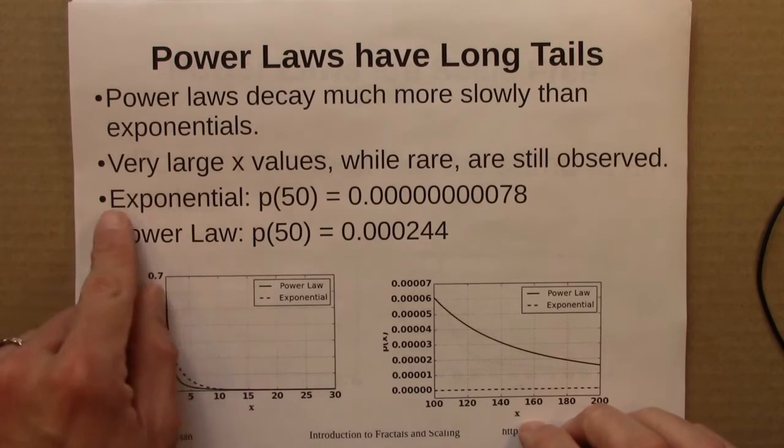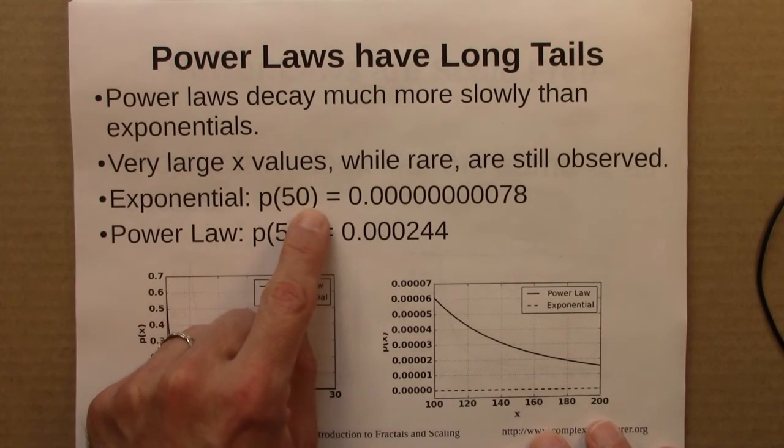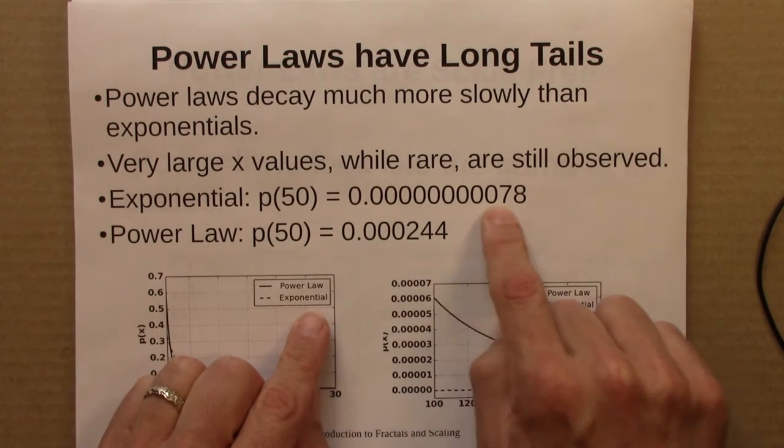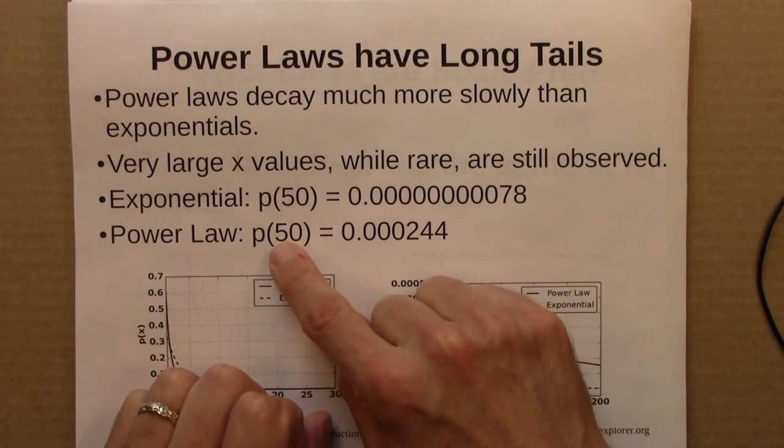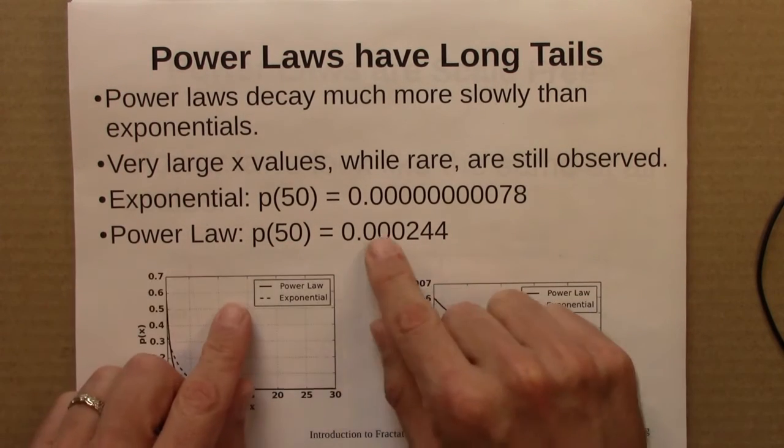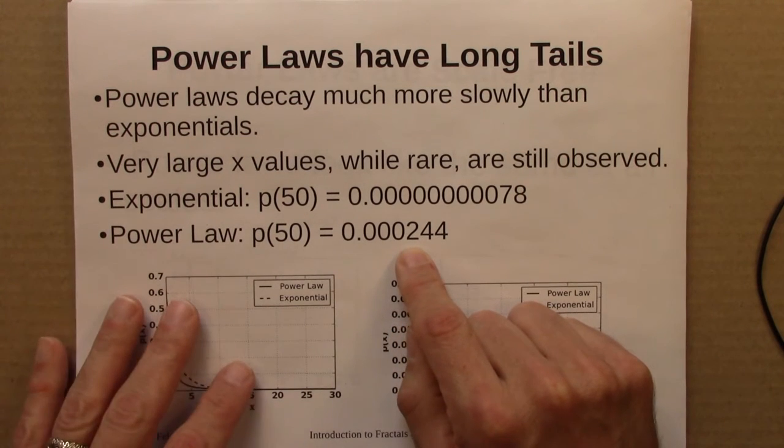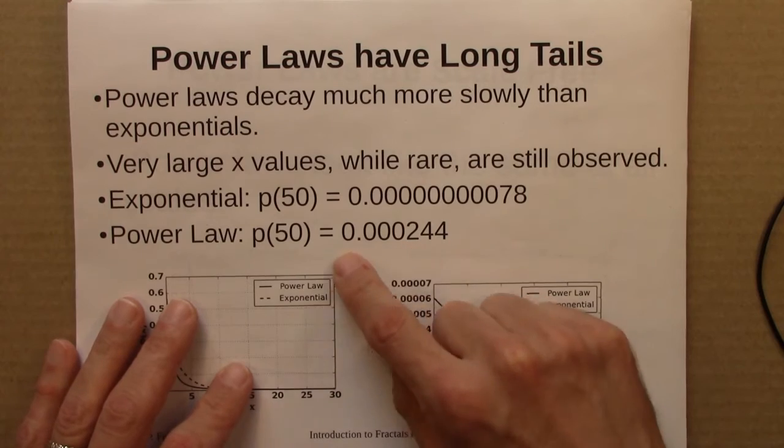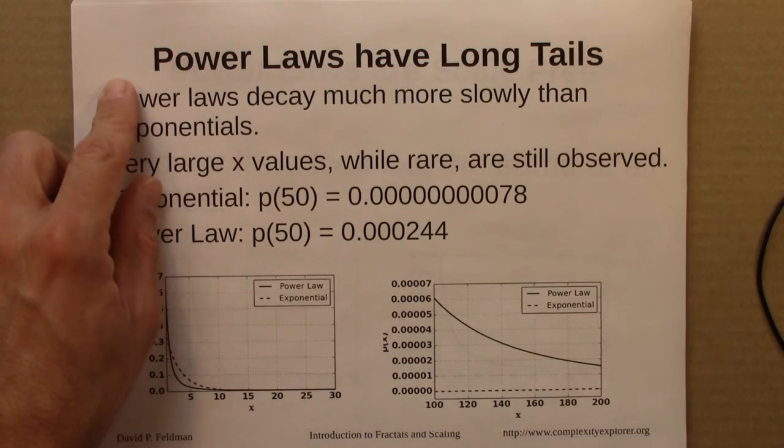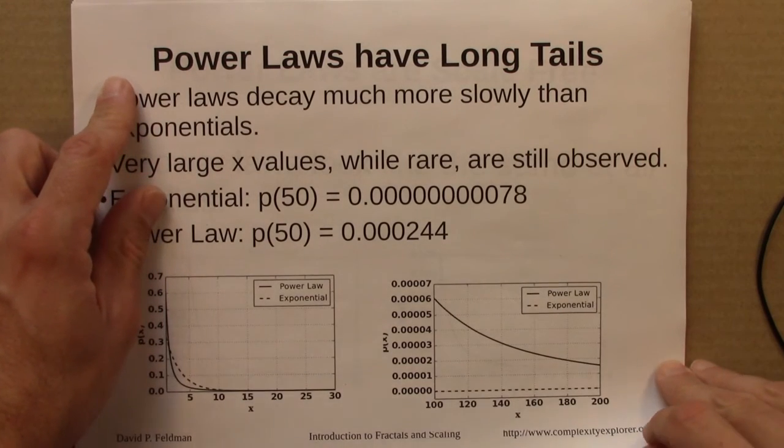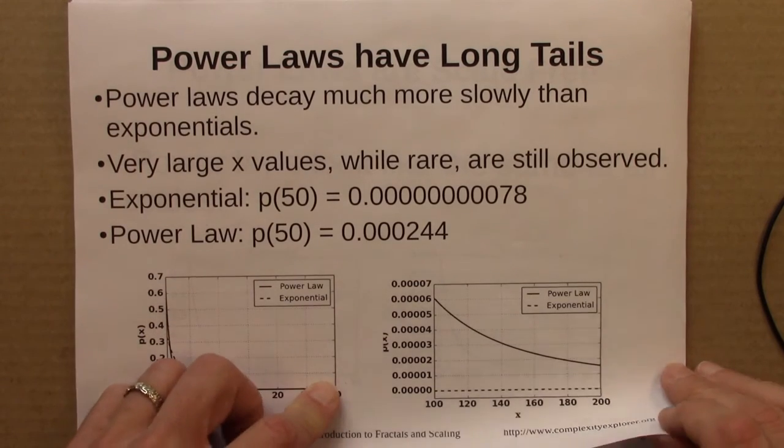Here's another way to see this. For the two functions we looked at in this unit. Exponential, what's the probability we get x equals 50? Very, very small. Something you'd probably never see in your lifetime. What's the probability you'll get x equals 50 with a power law? This is small, but not unthinkable. If we were to sample a couple hundred thousand times, we'll see things like this, or larger still. So this behavior is referred to as a long tail. Power laws have a long tail. Extreme events are unlikely, but not that unlikely.